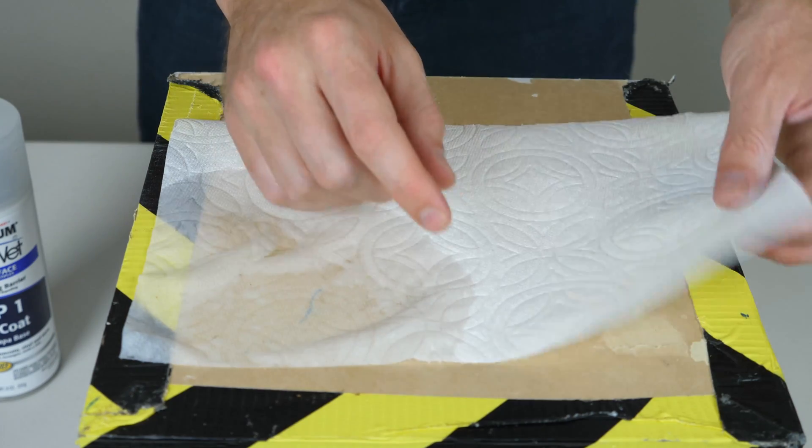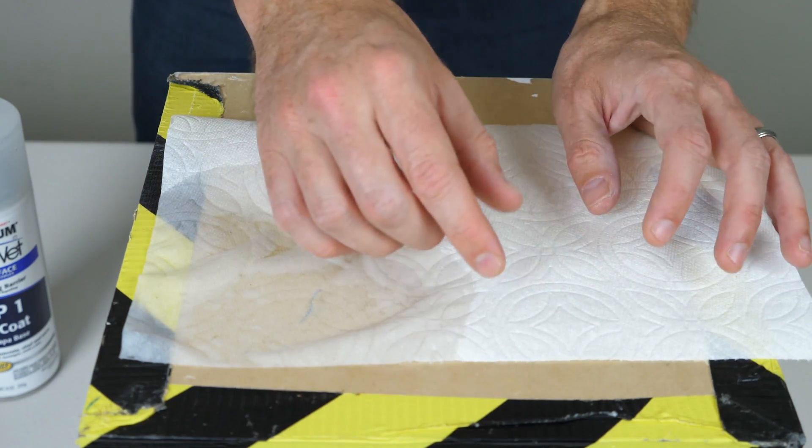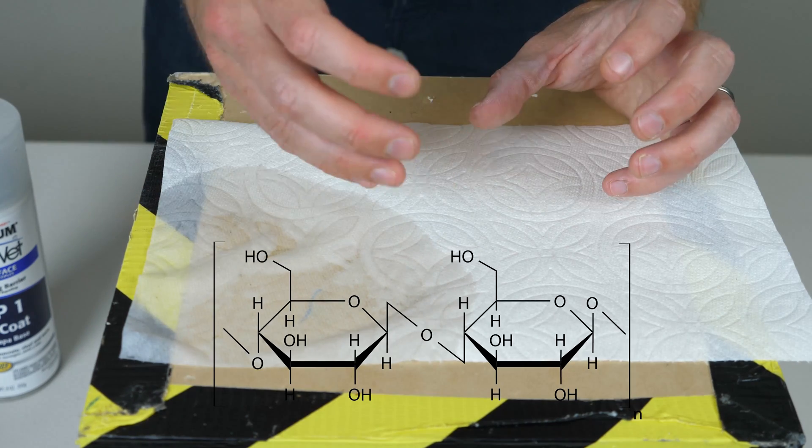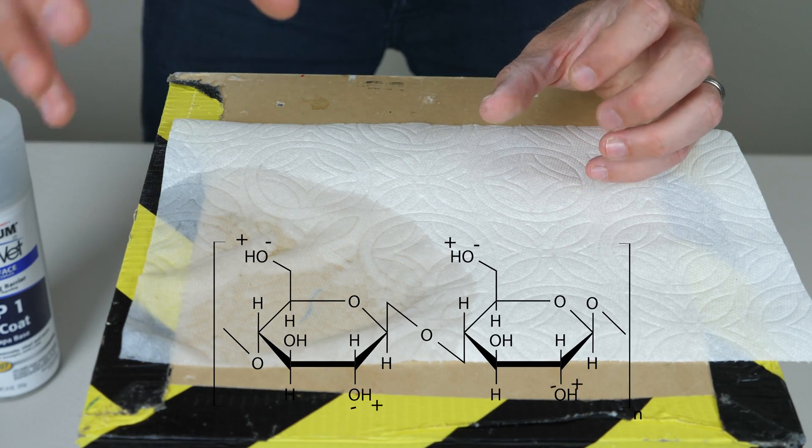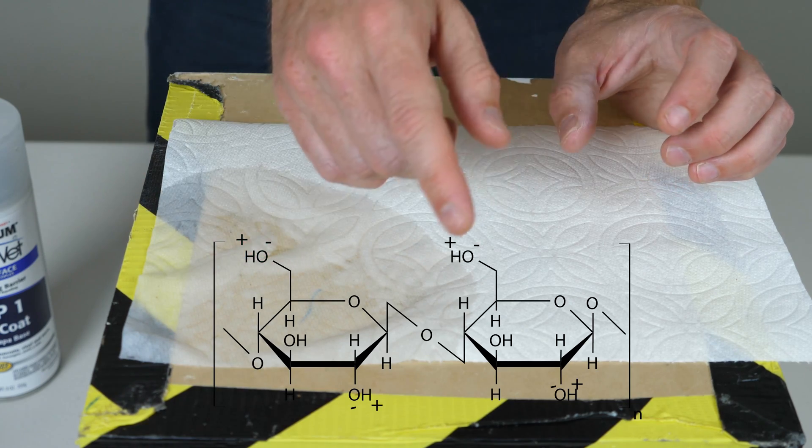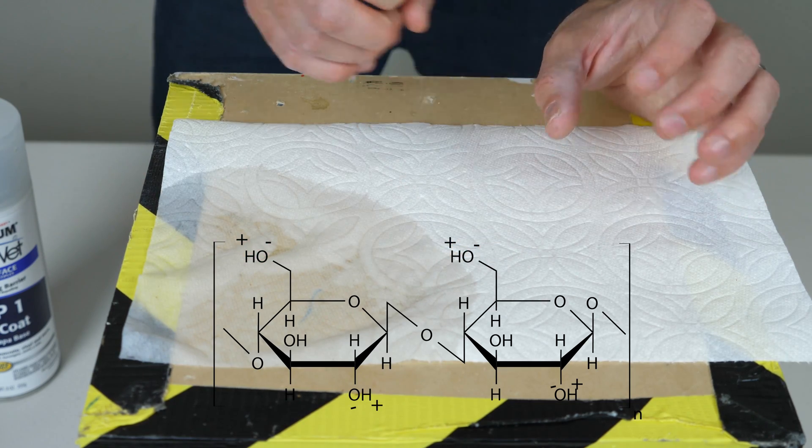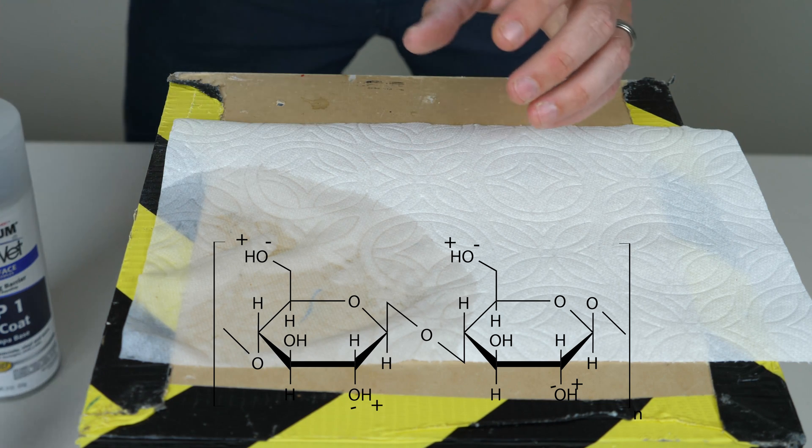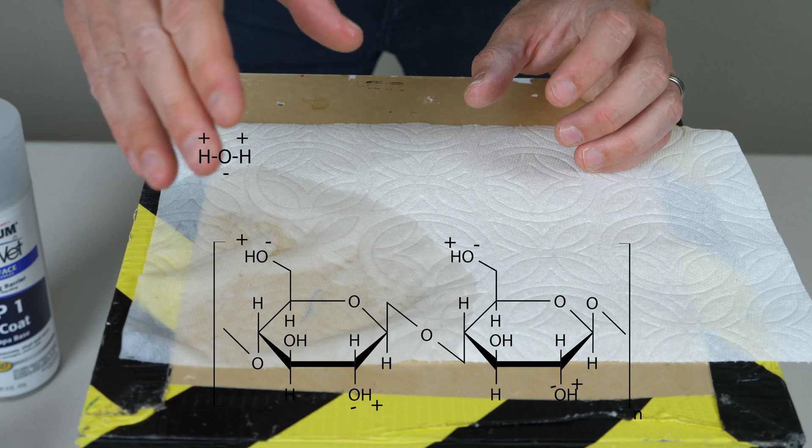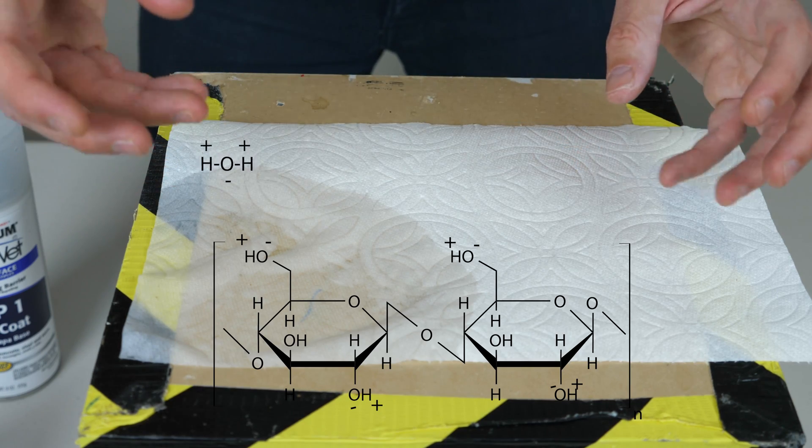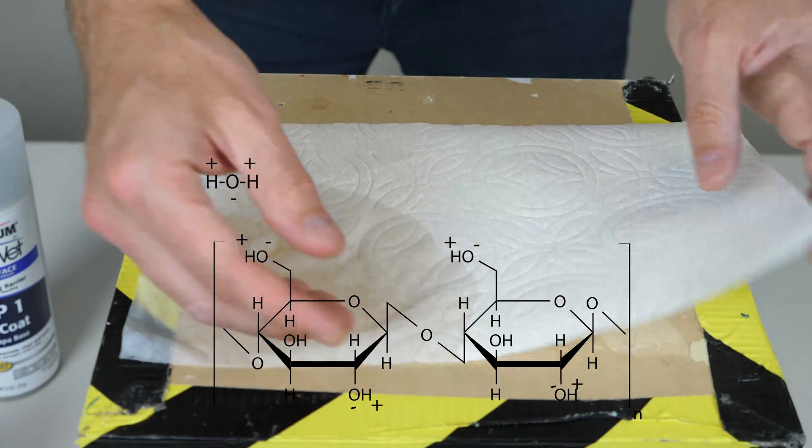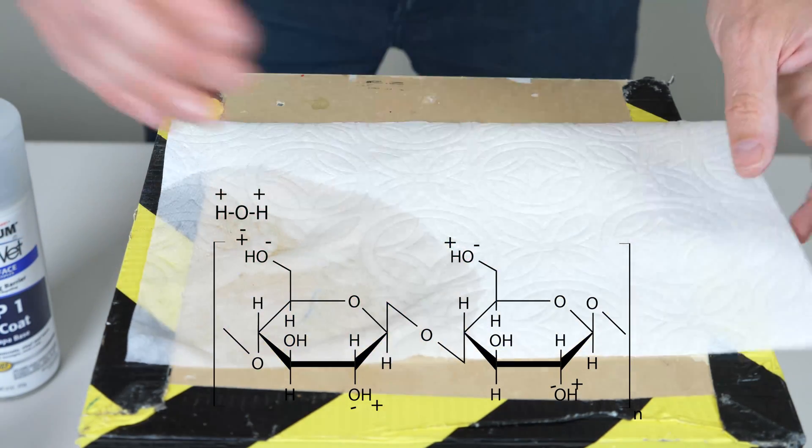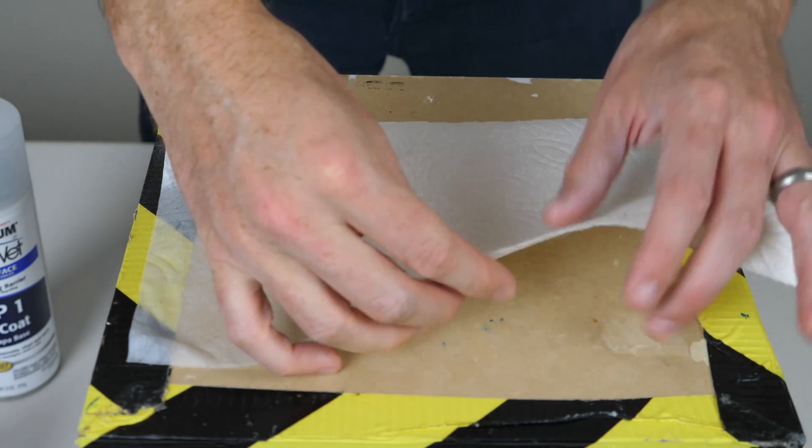And the reason that cellulose attracts water is because it has these small groups of oxygen hydrogen, and the oxygen likes to pull electrons towards it more, and so it leaves a slight positive charge on the hydrogen, a slight negative charge on the oxygen. And that is also what happens with water. Water molecules have a slight negative charge on the oxygen and a slight positive charge on the hydrogen, and so those charges can combine together and they electrically stick to each other, and so it makes the water want to stick to the cellulose.